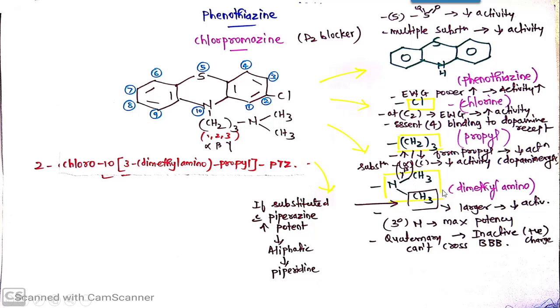If this methyl or hydrogens are substituted with some heterocyclic ring or aliphatic compounds, then activity changes take place. If this substituent is substituted with piperazine ring, then it gives potent derivatives. Aliphatic chain substitution or other heterocyclic ring piperidine substitution is also possible.